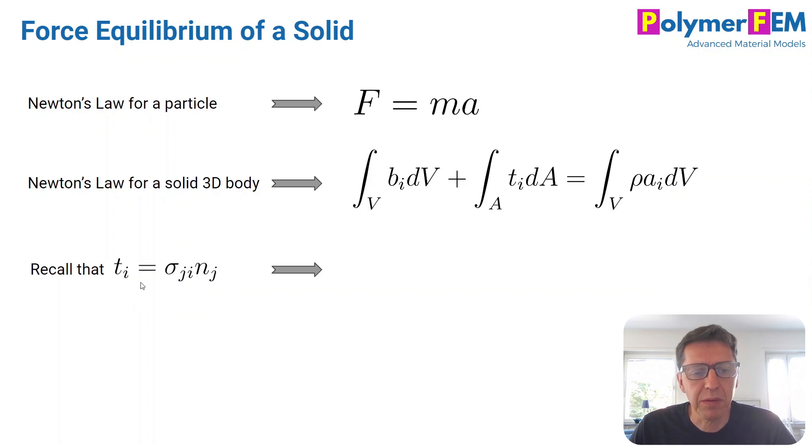There are two steps to it. The first one is to convert the surface traction to a stress. The surface traction is by definition the same as the stress and the direction of the surface at that point. So sigma_ji times n_j gives you the surface traction in the i direction. You can take this and plug it into this second term here, and then you get this equation.